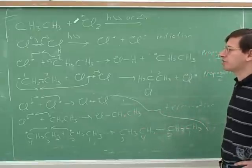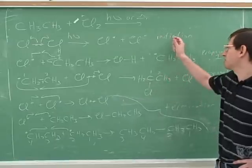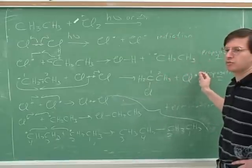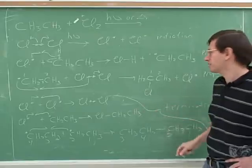On the other hand, if all the instructor was asking to do is to predict the product, you could just focus on these steps. For predicting the product, what's important is initiation, propagation one, and propagation two. Termination is not really very important unless the instructor actually asks you for it. Once you've gotten here, you've actually already shown the product.